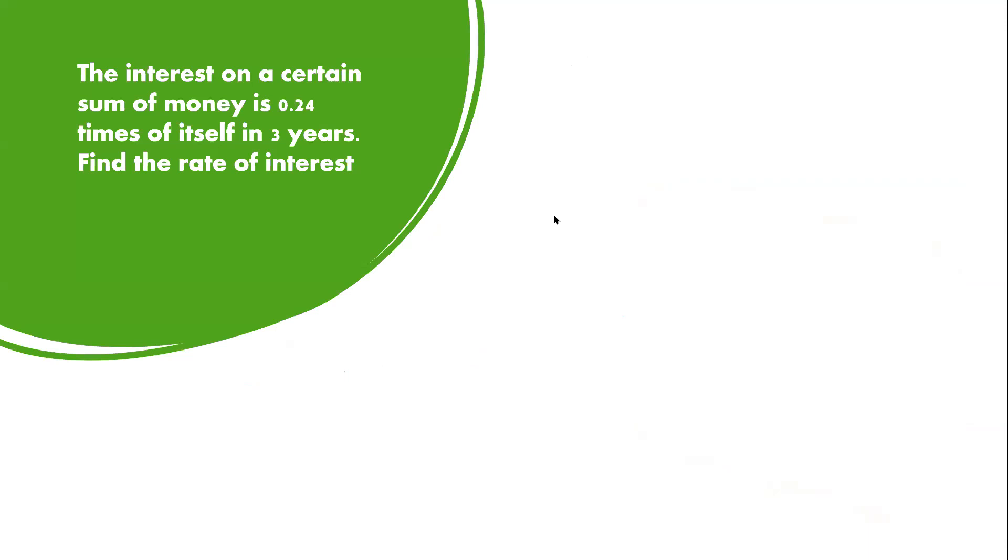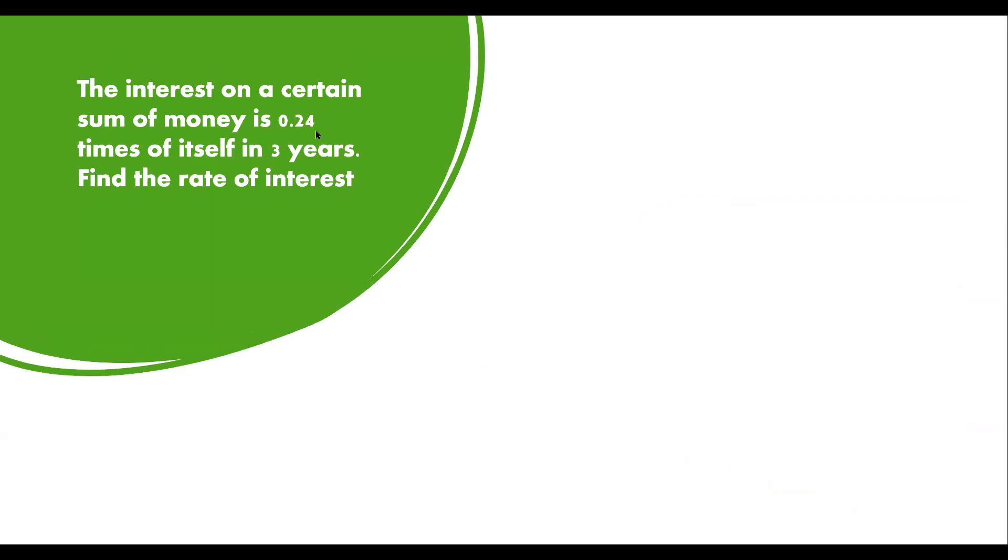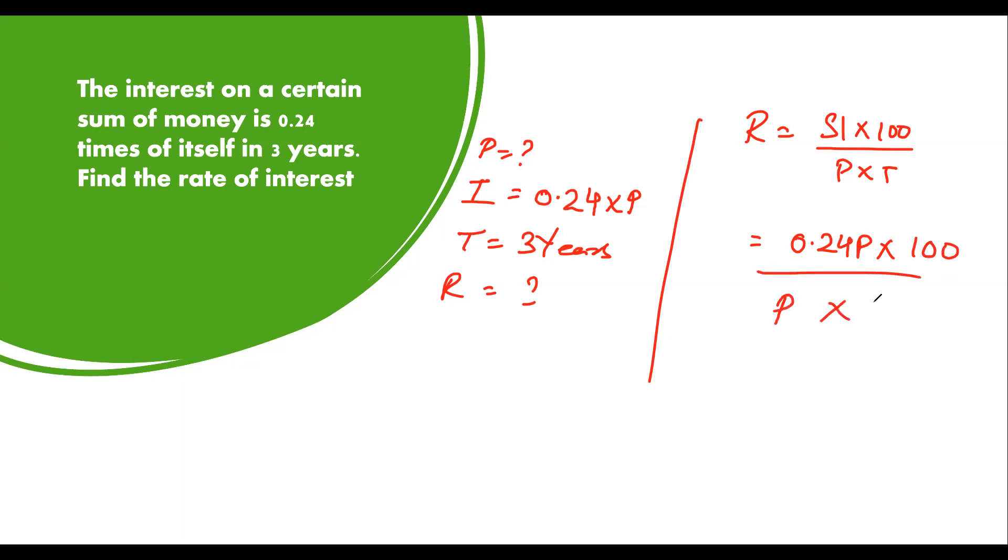Let's do another question. The interest on a certain sum of money is 0.24 times of itself in 3 years. Find the rate of interest. So here principle is not given. We are told that interest is 0.24 times the principle, so SI = 0.24P. Time is given as 3 years. He is asking us the rate of interest. Rate formula is: R = SI × 100 / (P × T). So R = (0.24P × 100) / (P × 3).